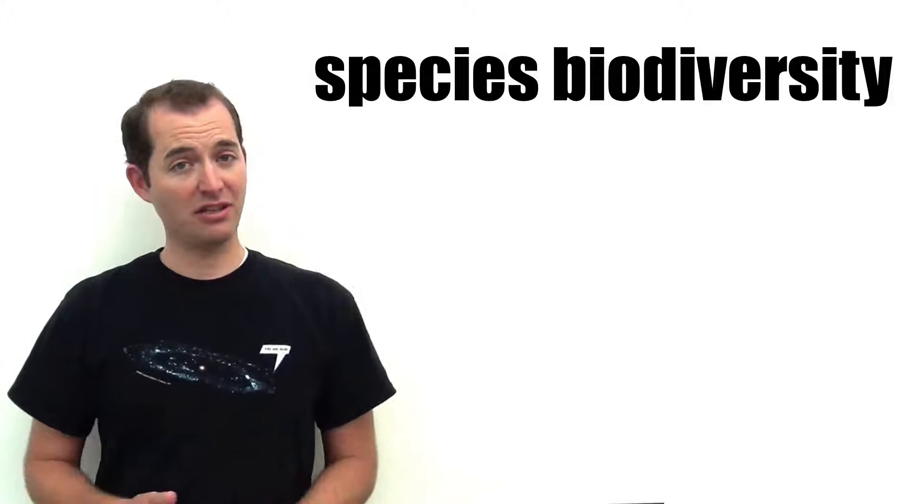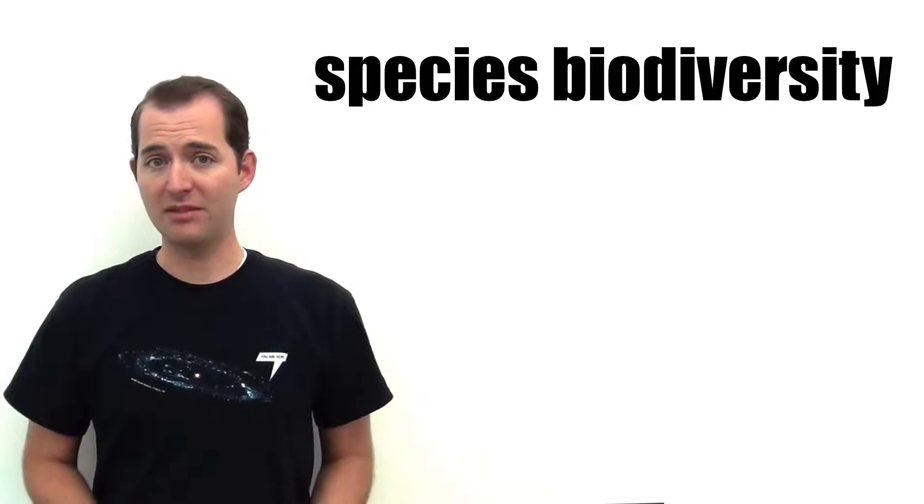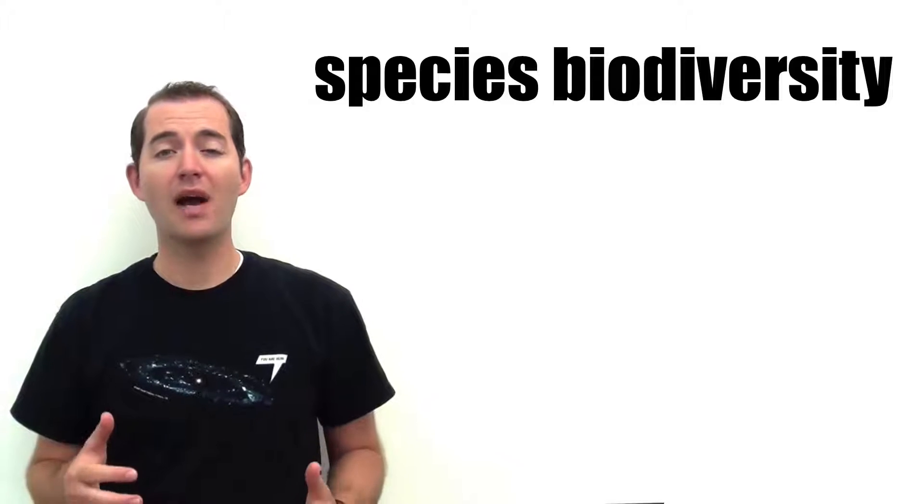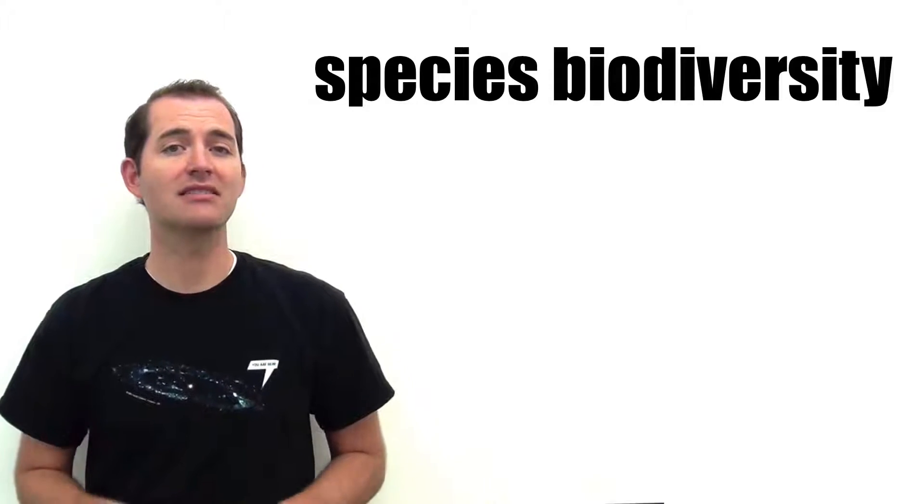Species biodiversity deals with variation of the types of species or the number of species in an area—looking at what types of species can be found.